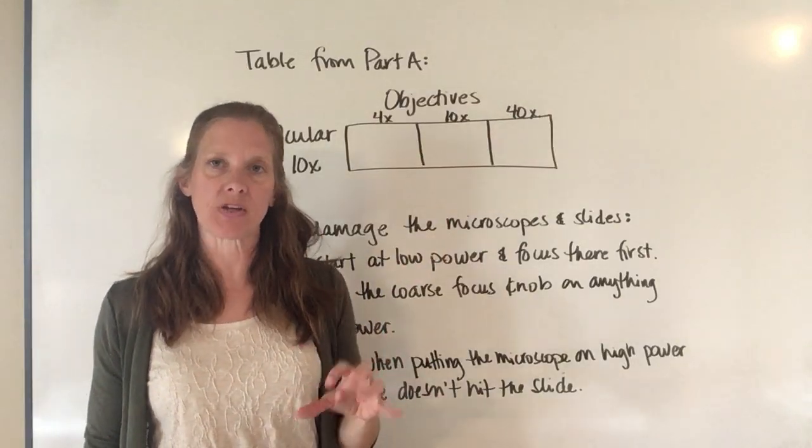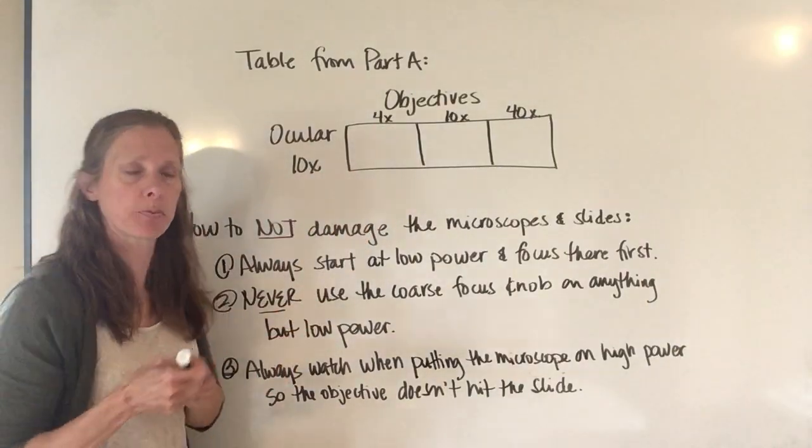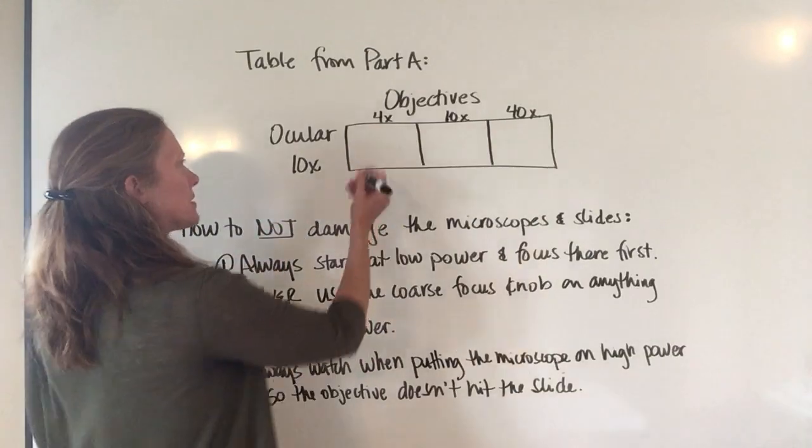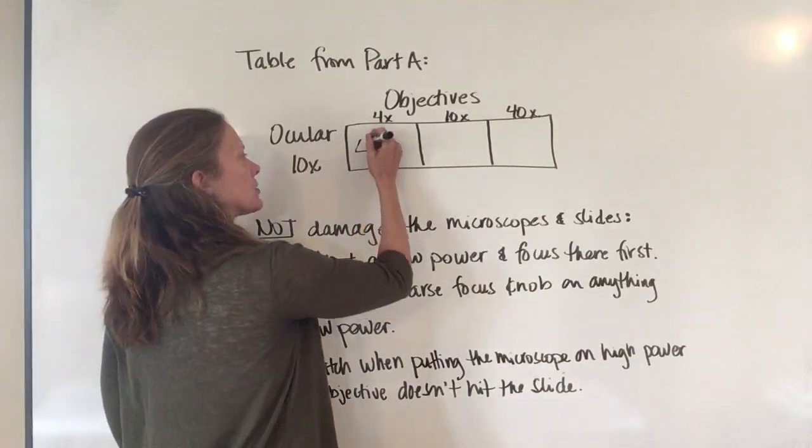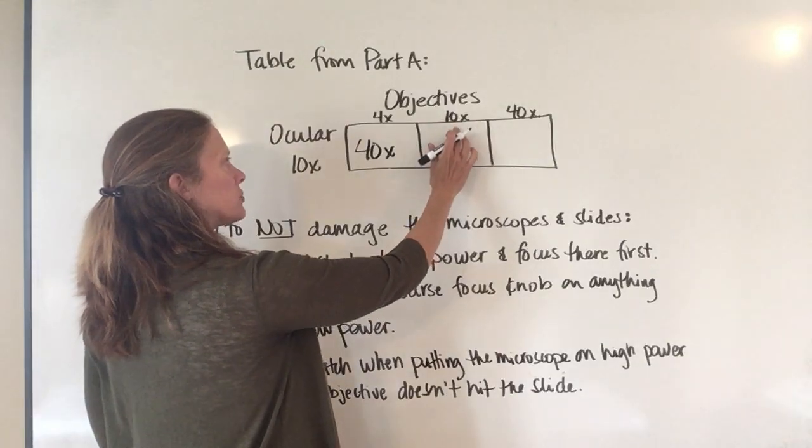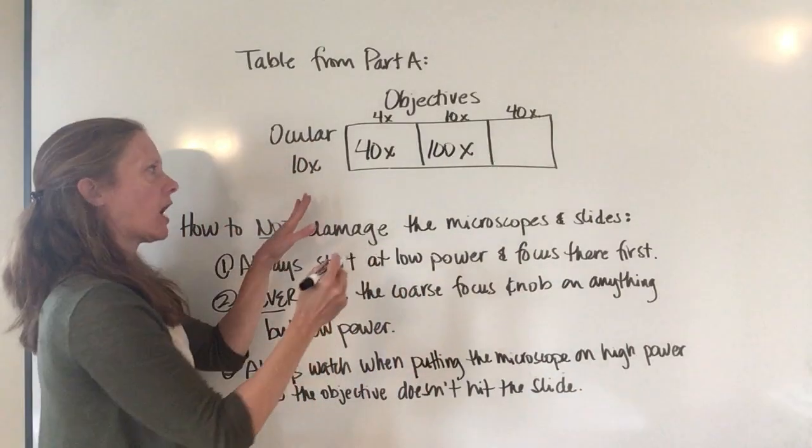To find out what magnification you're using, just multiply these numbers together. If you're using the low power objective, 4 times 10 is 40 times magnification. The middle power objective is 10 times 10, which is 100 times magnification.